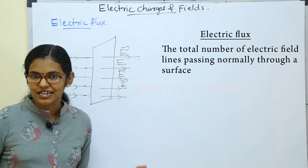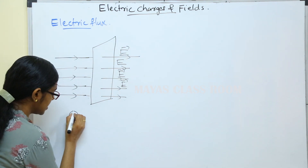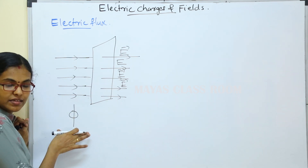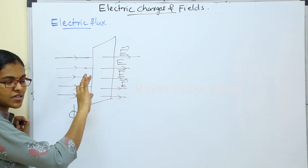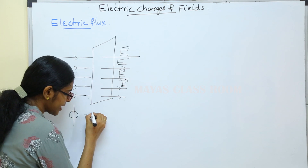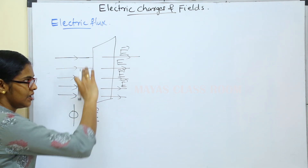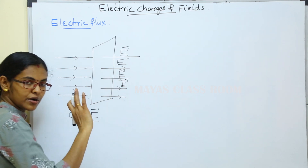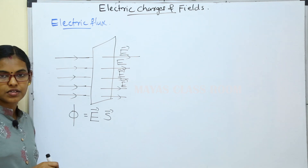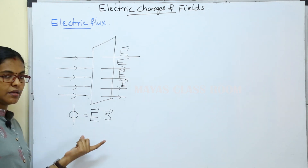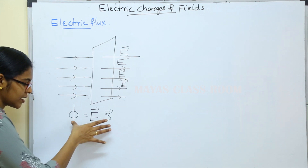The total number of electric field lines passing normally through a surface is known as electric flux. Electric flux φ is the total number of field lines passing normally through a surface. That is the product of electric field and the component of surface area perpendicular to the field.